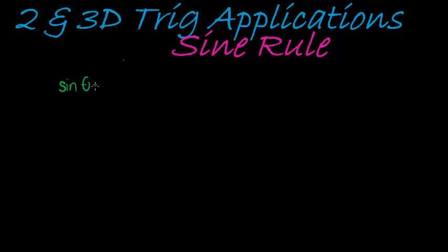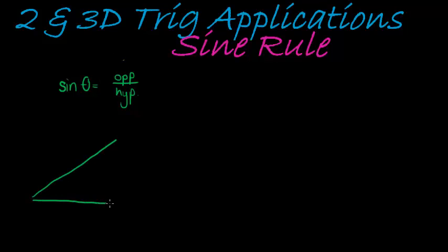Sine of theta is equal to opposite over hypotenuse. That's important to know. One thing you must remember is that I can only use the sine ratio when I'm working in a 90-degree triangle, a right triangle. One of the conditions to use sine theta equal to opposite over hypotenuse is that we need an angle equal to 90 degrees.